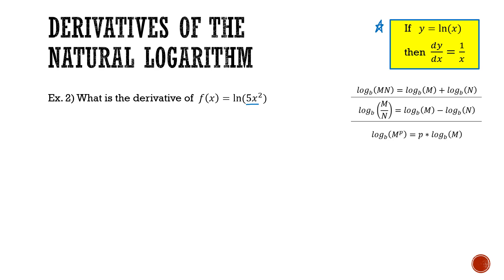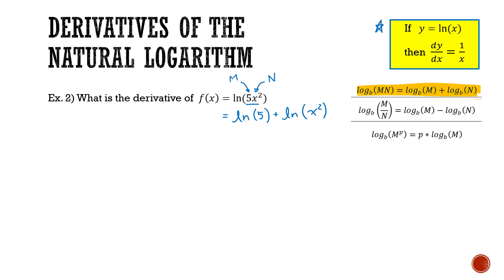To do this I'll go back to logarithm rules from pre-calc. The first rule I'll use is the product rule of logarithms: if you have the logarithm of a product of two values m and n, it can be rewritten as the sum of two logarithms, log of m plus log of n. In our example, 5 is our m and x squared is our n. So ln of 5x squared becomes ln of 5 plus ln of x squared. We're closer to the form we want, but we still have the exponent 2 on x.